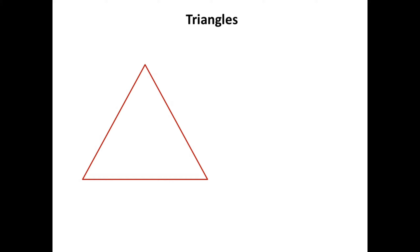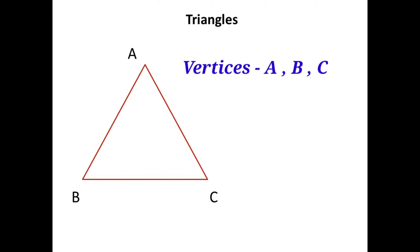Suppose there are three non-collinear points A, B, and C in a plane, and if we join each point with the remaining two, we get a compact diagram which is called a triangle. Here points A, B, and C are called the vertices of the triangle, and AB, BC, and AC are the three sides of triangle ABC.